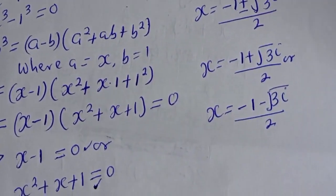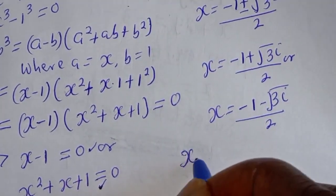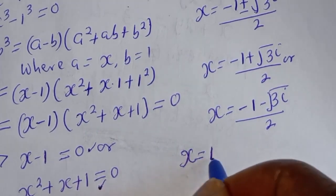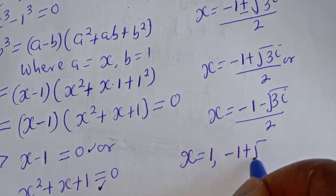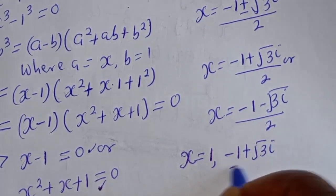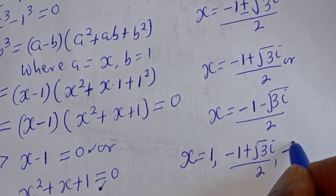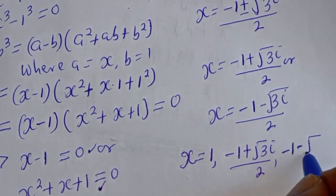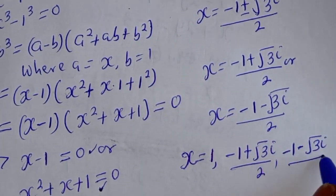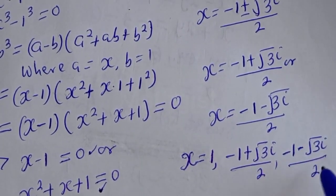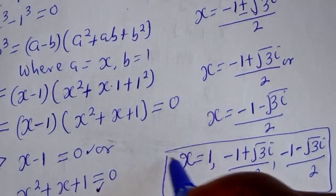Therefore, our final answers are: s is equal to 1, s is equal to minus 1 plus root 3i over 2, and s is equal to minus 1 minus root 3i over 2. This is the final answer. Thank you.